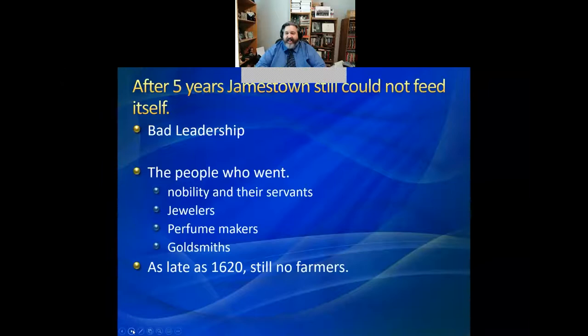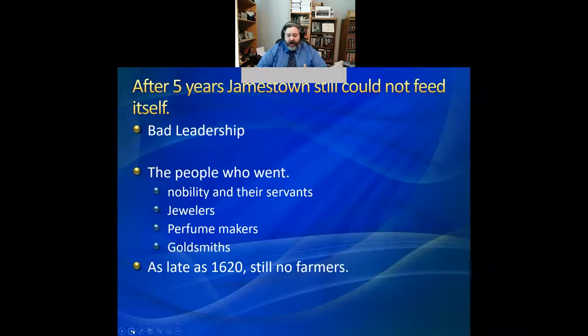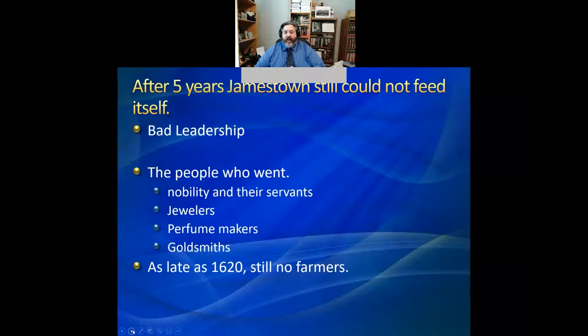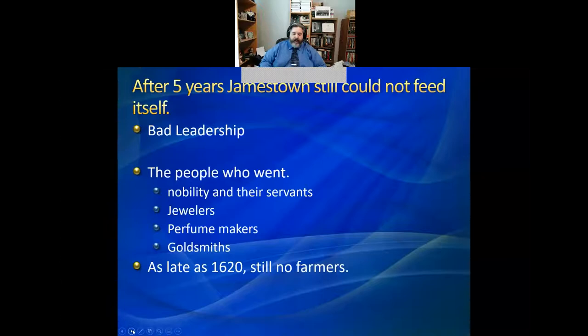By 1612, the colonial government in Virginia had been there for five years and was doling out punishments to the colonists. Some were hanged, some stretched on torture racks, some put before firing squads — and their crime was running away to live with Indians. The reason they were running away was because these colonists who still refused to grow food knew that the only people who actually had food were the Indians. They were choosing to risk going to the Indians for corn rather than starving to death in Jamestown.